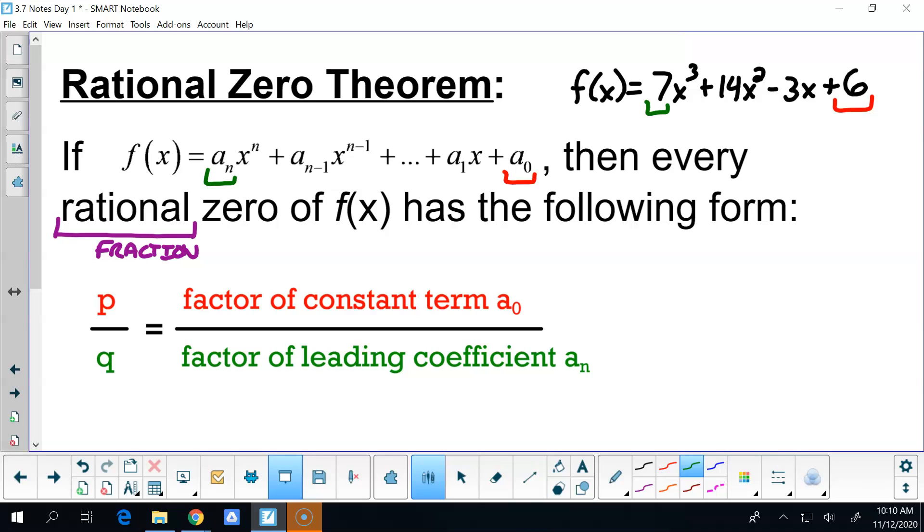and dividing it by any factor of the leading coefficient a_n, and that's going to give us a list that we can work off of. Because if I just said solve that equation and it wasn't factorable by any of the means that you know how to factor by, you would have an infinite amount of zeros that you would be able to try. The Rational Zero Theorem takes that infinite amount of zeros and narrows it down.